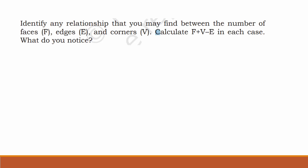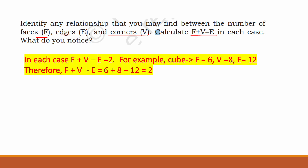Identify any relationship between the number of faces, edges and corners. Calculate F plus V minus E in each case, where F is the number of faces, V is the number of corners or vertices, and E is the number of edges. For example, for a cube: F=6, V=8, E=12, so F+V−E = 6+8−12 = 2. This is true for all the rows — in each case, F plus V minus E equals two. That is the relationship.